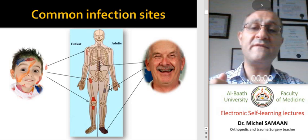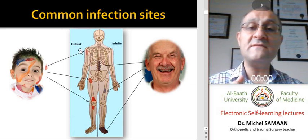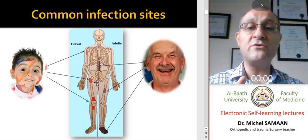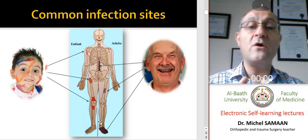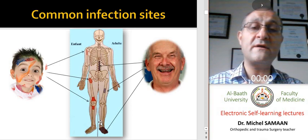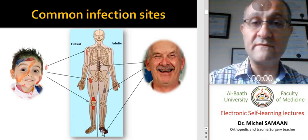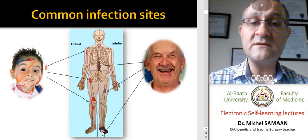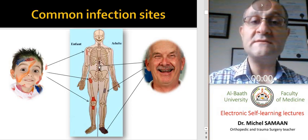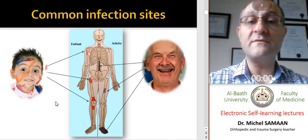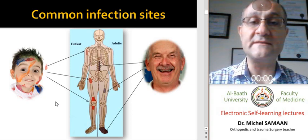The common sites of infection in children, as we have said, are the metaphyseal regions — either upper humerus, upper femur, around the knee. On the other hand, in older patients we may have foot because of the diabetic ulcer, or in diaphyses and in the vertebral column, hematogenously.